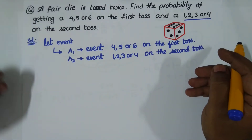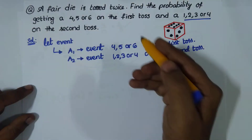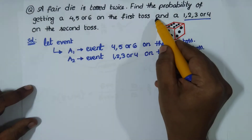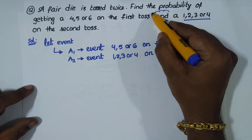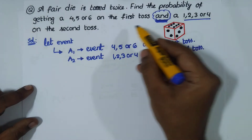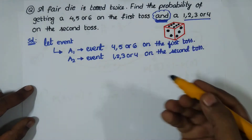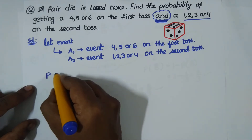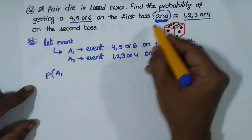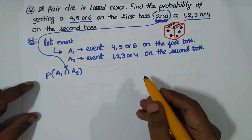Now read the question again: a fair die is tossed twice, find the probability of getting 4, 5, or 6 on the first toss AND 1, 2, 3, or 4 on the second toss. In probability theory, always give emphasis on the word 'and' — it can be expressed as intersection. So event A1 and event A2 means A1 ∩ A2.